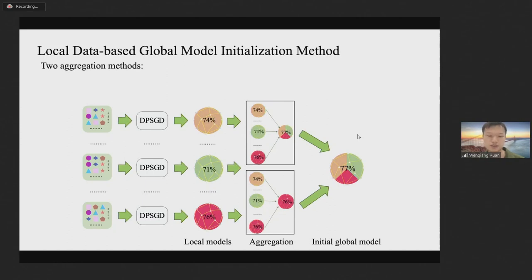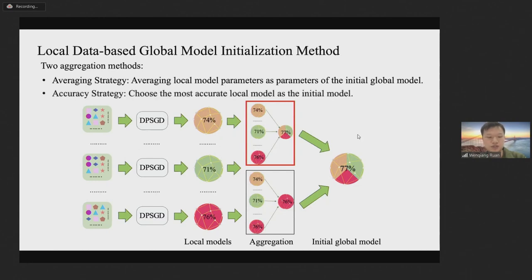We propose two aggregation strategies. The first one is average strategy. That is, average local models as parameters of the initial global model. However, data are not identical and independently distributed. Initializing the global model by averaging local models may cause the accuracy of the initial global model to be lower than local models. Therefore, an alternative strategy is the accuracy strategy. That is, choosing the most accurate local model as the initial global model.